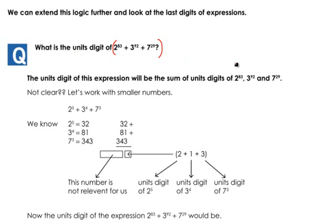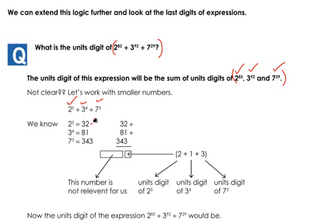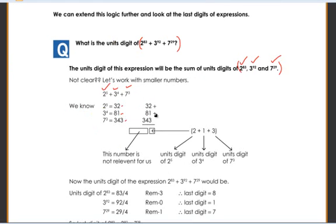The units digit of this expression would be the sum of the units digits of 2 power 83, 3 power 92, and 7 power 29. Let us take some smaller numbers to get more clarity on this concept. Take 2 power 5 plus 3 power 4 plus 7 cubed. We know 2 power 5 is 32, 3 power 4 is 81, and 7 cubed is 343. What happens when we add these three numbers?